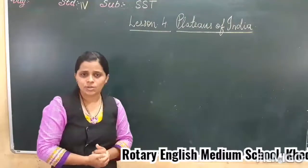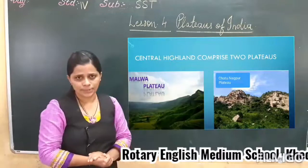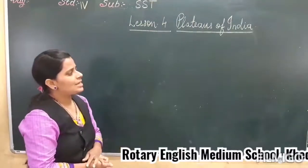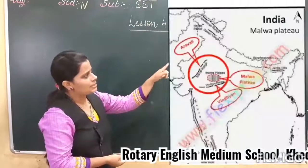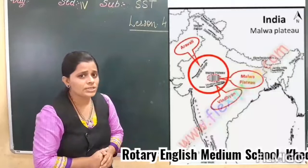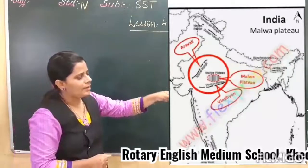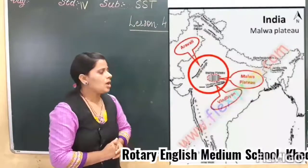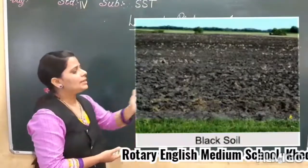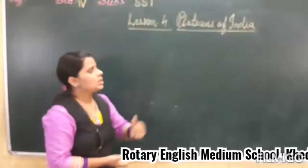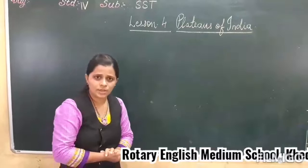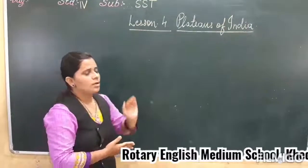The Central Highlands comprise two plateaus: Malwa Plateau and Chhota Nagpur Plateau. The Malwa Plateau is located between Aravali Hills and Vindhya Range. Here you will see the black soil which is quite fertile. The crops grown in this soil are cotton, oilseed and wheat.